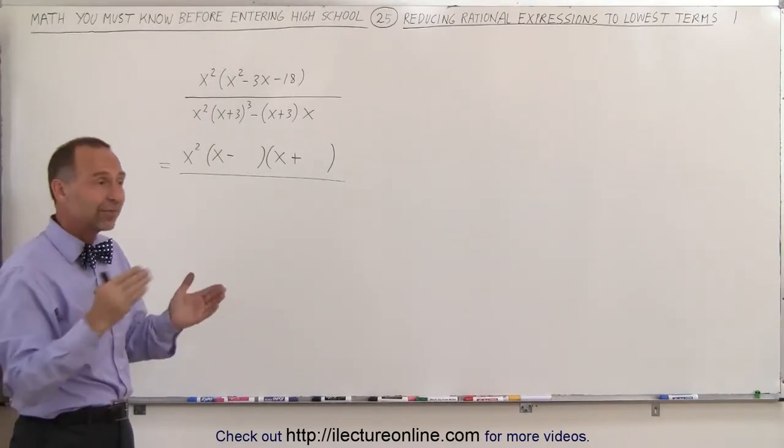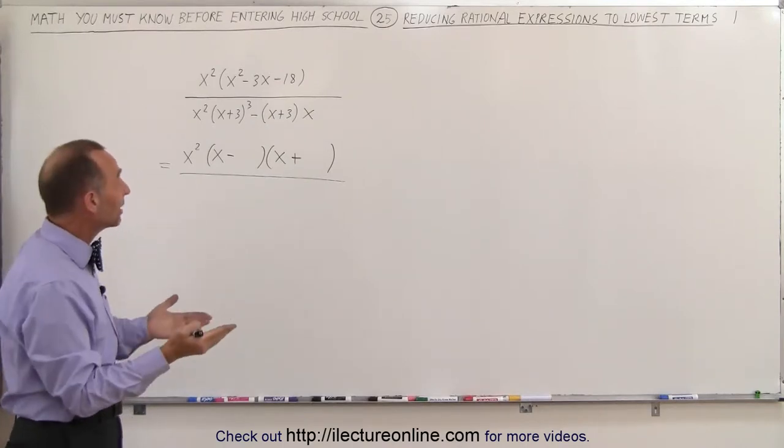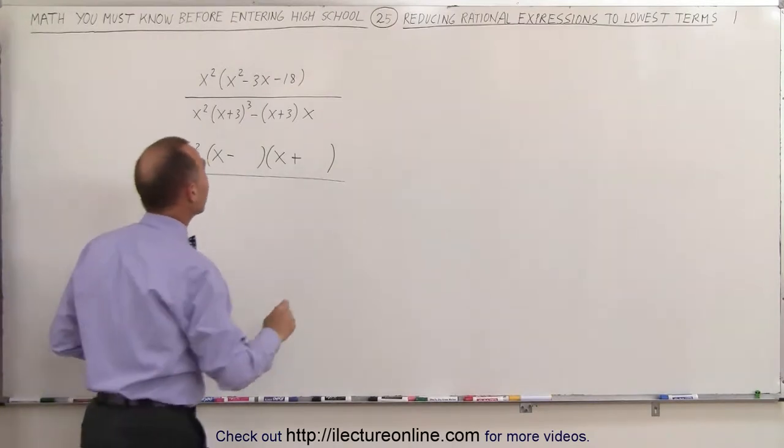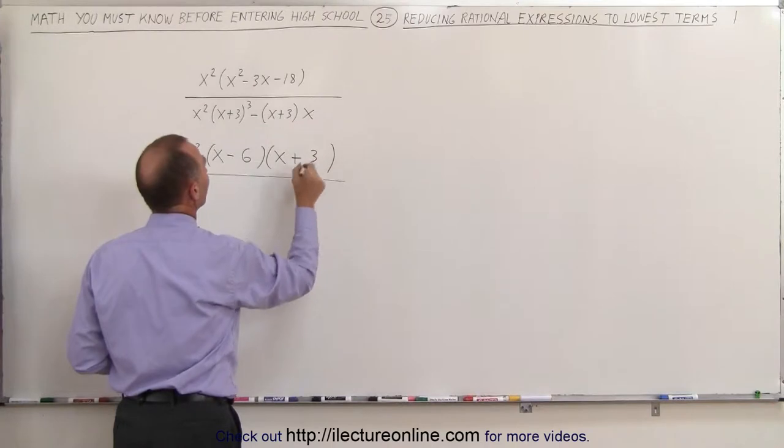How about 6 and 3? 6 times 3 is 18, and a negative 6 and a positive 3 together is a negative 3. Right? So I need a bigger number as a negative, so negative 6 and positive 3.